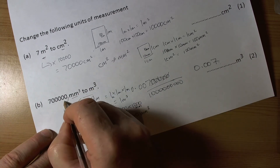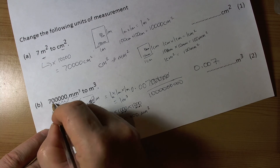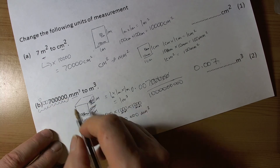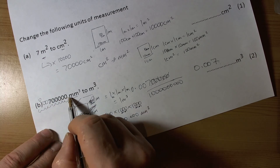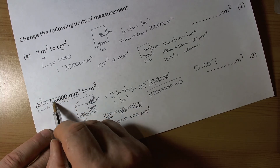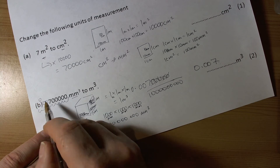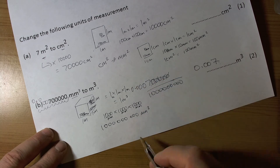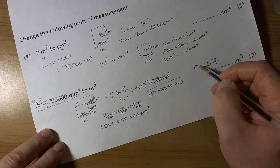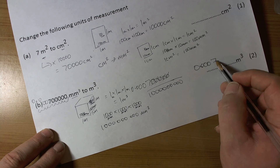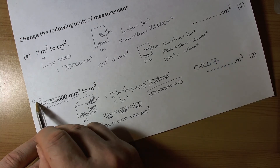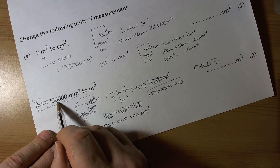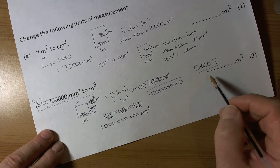We actually need another zero, so it is going to be 0.0007. Checking that by going backwards nine places — yes, so 0.0007 cubic metres.